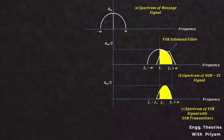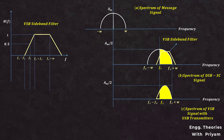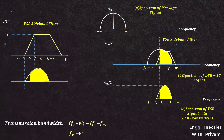The VSB sideband filter is a specially designed sideband shaping filter with amplitude response H(F), constrained to a limited bandwidth ranging from the lower frequency fc−fv to the upper frequency fc+W. The transmission bandwidth equals fv+W. For this VSB sideband filter, the amplitude at frequency fc is 0.5 and the amplitude at frequency fc+fv is 1. The vestige of the lower sideband has an upper frequency of fc and lower frequency of fc−fv.